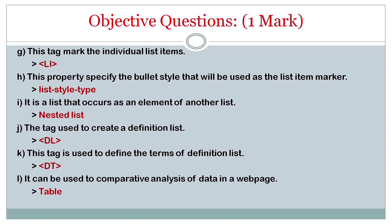The tag used to create definition list - it is DL. The tag is used to define terms of definition - it is DT. It can be used to comparative analysis of data in a web page - it is table.